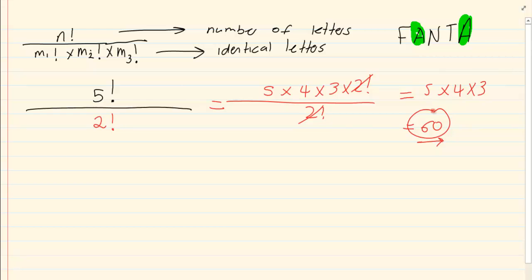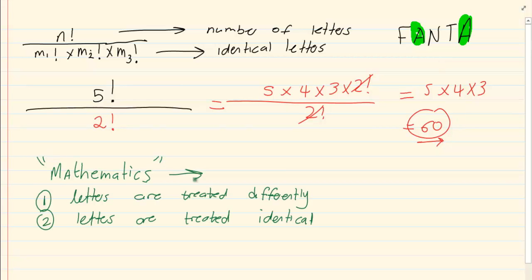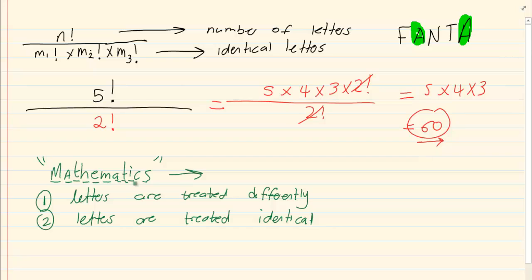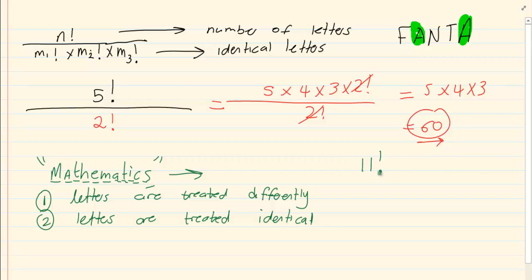Now what happens when you have more than one repeated letter in a word? Let's take the word MATHEMATICS. I want to know how many words I can form with MATHEMATICS. If I count, there are 11 letters, which means 11 positions. So if I have 11 positions and 11 letters, my answer starts as 11 factorial.